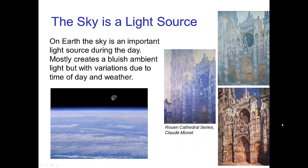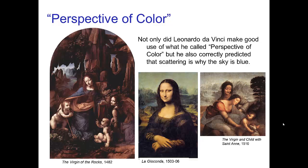This reminds us that the daytime sky is an important light source. It's not just the sun in the sky which is a source of light — it's also the atmosphere itself which is a light source. This effect of atmospheric perspective was probably first utilized, understood, and described by Leonardo da Vinci, who called it 'perspective of color.' He made very good use of it in the backgrounds of his paintings. Here are three of the more famous ones.